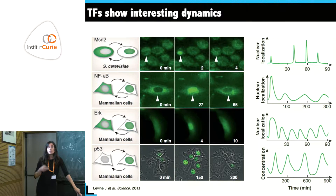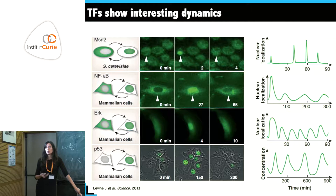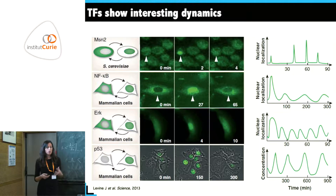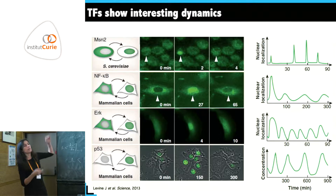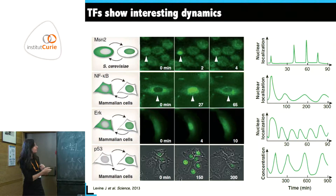This is seen from yeast up to mammalian cells, not in bacteria since bacteria don't have a nucleus properly separated by a membrane. Some regulation involving localization does occur in bacteria, but not in the strict sense of being cytoplasmic then nuclear — and this is very exciting.